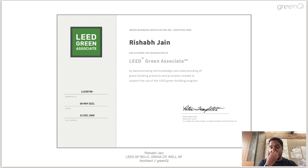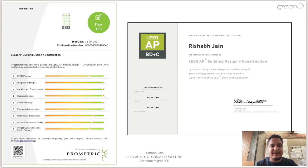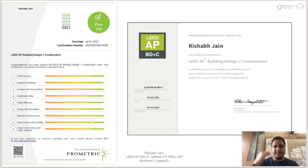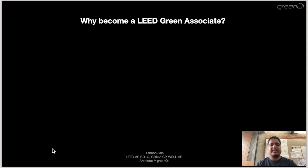After clearing the LEED Green Associate exam — the tier-one exam — you will be awarded a certificate. I cleared my LEED GA back in May 2021. When you clear your LEED specialty exam, you will get a LEED AP certificate. I cleared my LEED AP Building Design and Construction exam in July 2021. On the left you can see the scorecard available right after the exam; the certificate may take two to three days to process. I scored around 193 out of 200 on my LEED specialty exam.